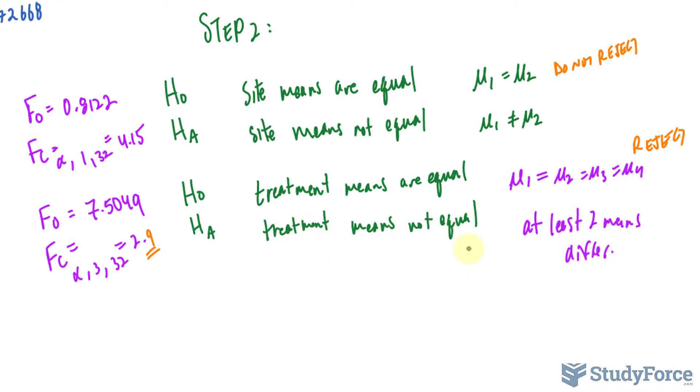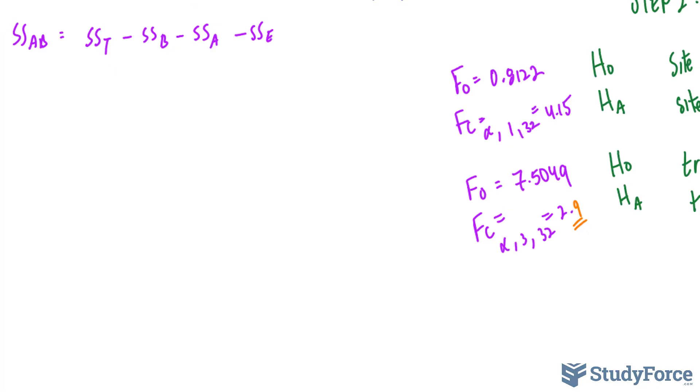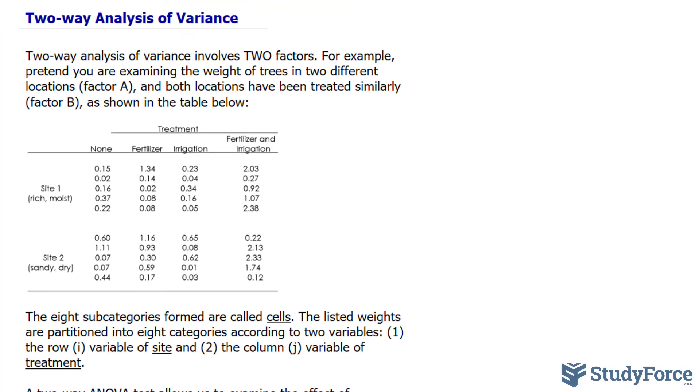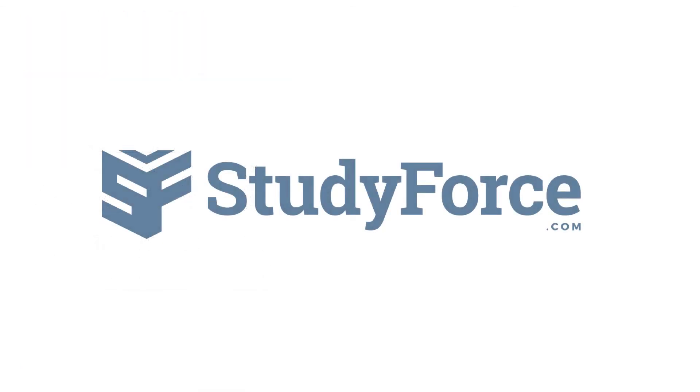Overall, the site of the poplar trees does not seem to affect the weight. But there's sufficient evidence for the treatment at 0.05 to conclude a significant difference between at least 2 treatment means. That is, the treatments of the poplar trees does seem to affect their weights. That was a really big process and I hope you followed along until the very end. And that is how to do the two-way analysis of variance by hand.